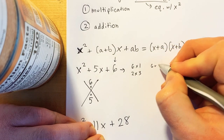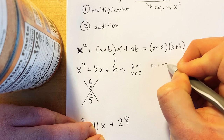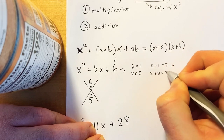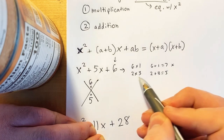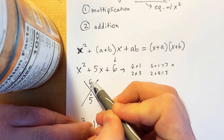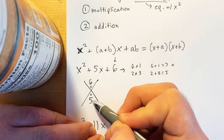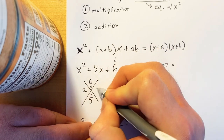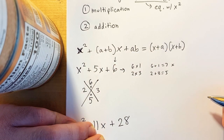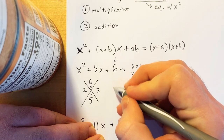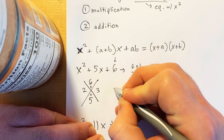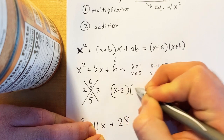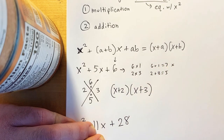I know that 6 plus 1 is 7, so that's not going to work. But 2 plus 3 is 5 — that's our winner. We know that 2 times 3 is 6 and 2 plus 3 is 5, so I'm going to write 2 and 3 on the sides of the X. The answer for this one is x plus 2, x plus 3.